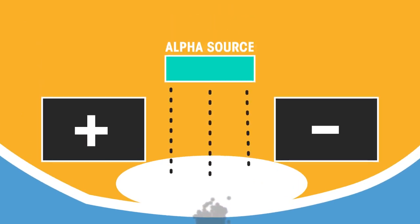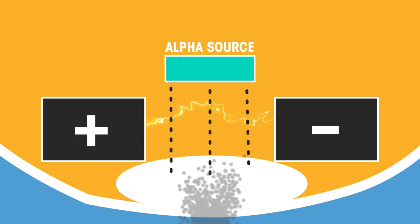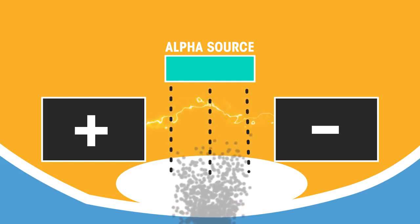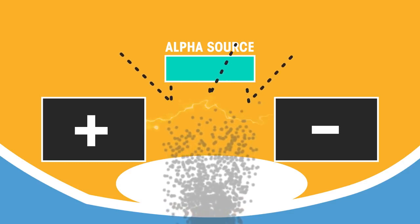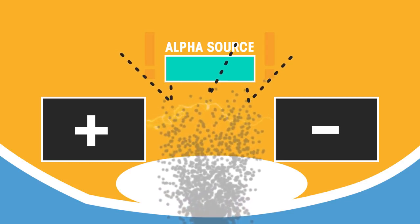Smoke detectors emit a constant stream of alpha particles. A sensor continually detects these alpha particles causing a small current. If smoke particles come between the source and the detector, the current is decreased and an alarm goes off.